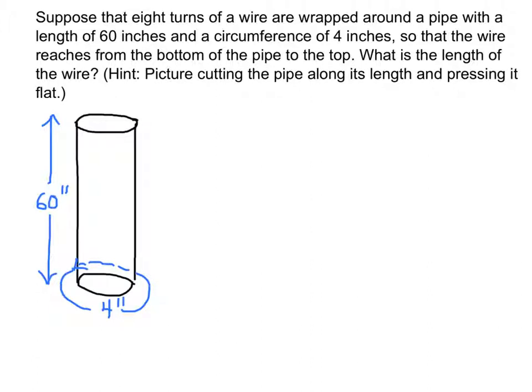Now what we want to do is from the hint tells us to cut the pipe along its length. So here imagine that this red dashed line that I'm drawing would be cutting the pipe. And so we cut the pipe and then we're going to cut it right along this line and then we're going to stretch it out. So let's do that.